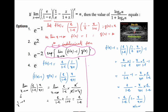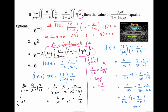Therefore, applying the exponential formula, the limit equals e to the power (e upon 1 minus e), which is given as alpha. Applying log on both sides, e upon (1 minus e) equals log alpha. So 1 upon (1 plus log alpha) equals 1 plus e upon (1 minus e), which equals 1 upon (1 minus e). Therefore log alpha upon (1 plus log alpha) equals (e upon 1 minus e) divided by (1 upon 1 minus e), so the answer is e. The answer is option D, e.